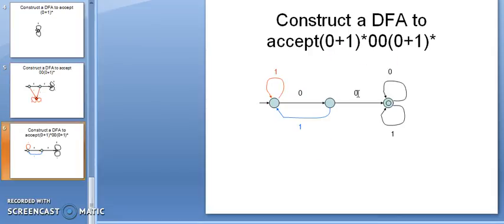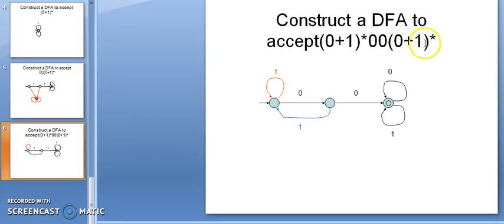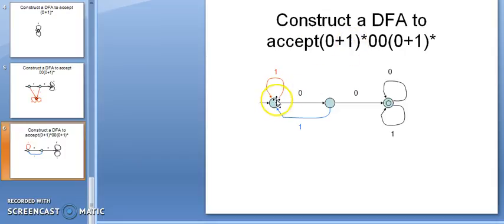Construct a DFA to accept (0+1)* followed by 00 followed by (0+1)*. This means the string should contain 00 as a substring. In the beginning and at the end, I can have any combination of 0 and 1. The minimum string is 00, so we first construct the DFA for 00 — that state is the final state. For the start state I've already handled 0; what about 1?